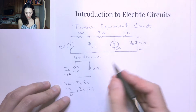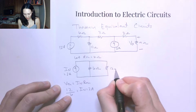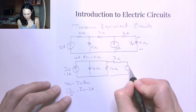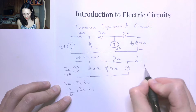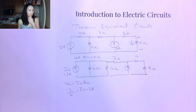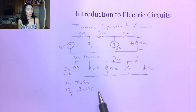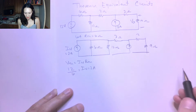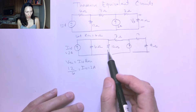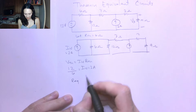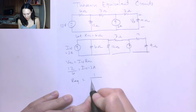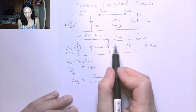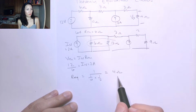Now I still have the rest of my circuit. This thing is connected in parallel with a 12-ohm resistor, and I still have my 3-ohm resistor. I can now simplify the two resistors in parallel. The equivalent between the 6-ohm and the 12-ohm is 1 over (1/6 + 1/12), which gives me a 4-ohm resistor. So I can replace these two parallel resistors with one 4-ohm resistor.